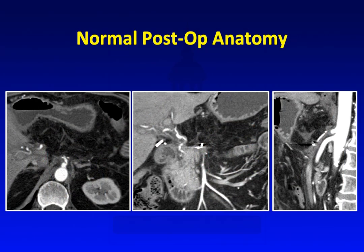This is normal post-op anatomy after an Appleby procedure. Due to the extensive surgery, most of the expected region of the pancreas is now filled with fat. You can see the fairly normal-looking pancreatic head, most of the surgical bed is filled with fat, and on the sagittal view you can see that the celiac artery has been ligated.